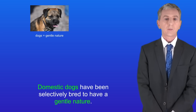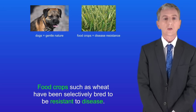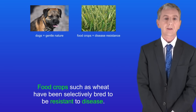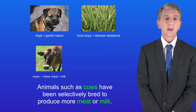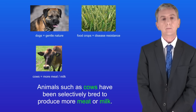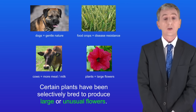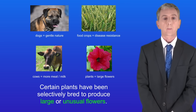Domestic dogs have been selectively bred to have a gentle nature. Food crops such as wheat have been selectively bred to be resistant to disease. Animals such as cows have been selectively bred to produce more meat or milk. And finally, certain plants have been selectively bred to produce large or unusual flowers.